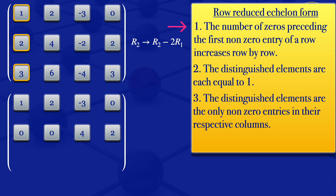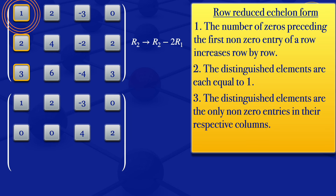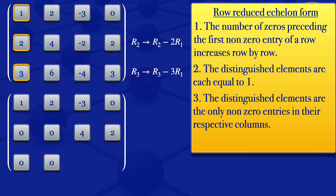So for us to satisfy condition number one, we need a zero where we have the three. When you have the three, to get a zero we need to subtract a three. So we multiply row number one by three — since we have a one there — to get a three, then subtract it from the three to get zero. So the elementary row operation is row three transforms to row three minus three times row one. So: three minus three gives zero; six minus six gives zero; minus four minus three times minus three gives five; three minus three times zero gives three.